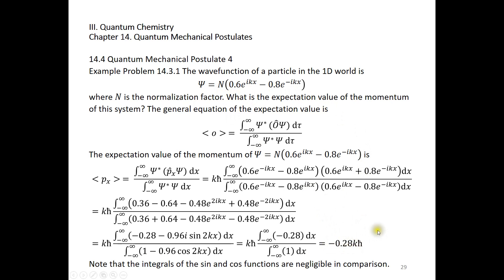There is an easy way to see this: the e^(ikx) term has a momentum of kh-bar and the e^(-ikx) term has a momentum of negative kh-bar. We have 36% of kh-bar and 64% of negative kh-bar, so 0.36 minus 0.64 gives negative 0.28 kh-bar anyway.